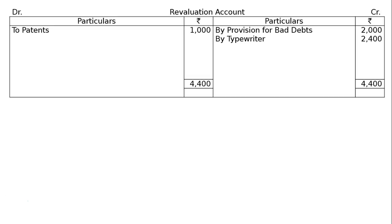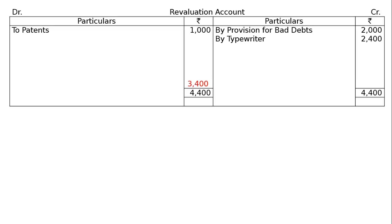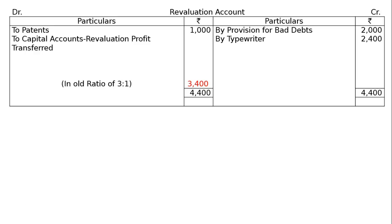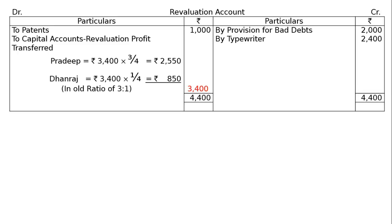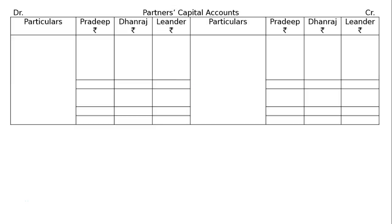Take the credit total of Rs. 4,400 to the debit side, minus Rs. 1,000 for patents, giving Rs. 3,400 to capital accounts — revaluation profit transferred in old ratio of 3 to 1. Pradeep's share: Rs. 3,400 multiplied by 3/4 equals Rs. 2,550. For Dhanraj: 1/4, the amount of profit payable is Rs. 850.